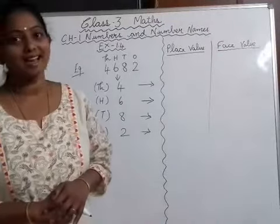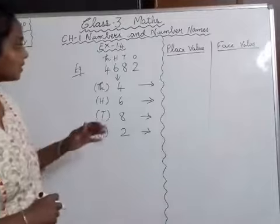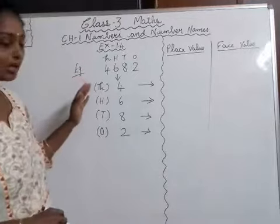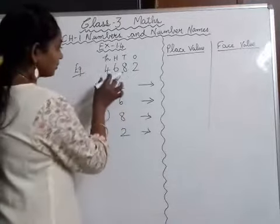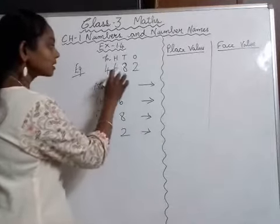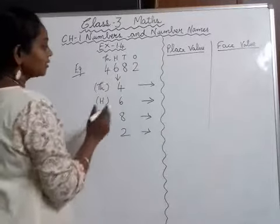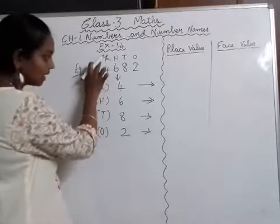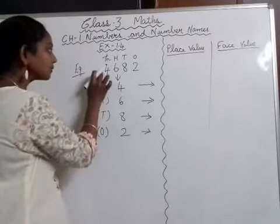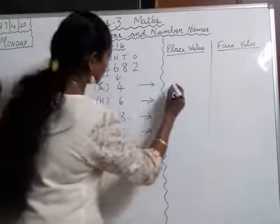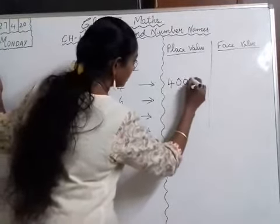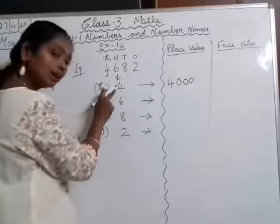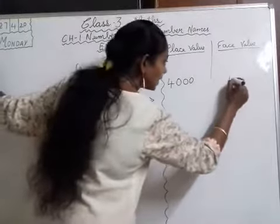Hello children, welcome to my maths class. Today we are going to learn about place value and face value. I'll give some examples. For the number 4682, the digit 4 is in the thousands place, so the place value of 4 will be four thousand. But the face value of 4 will be the same — 4.